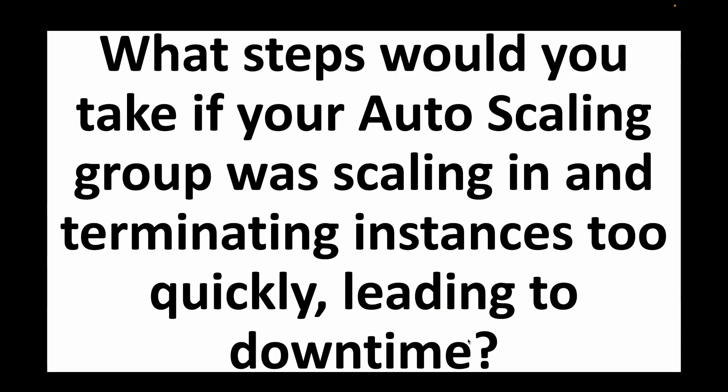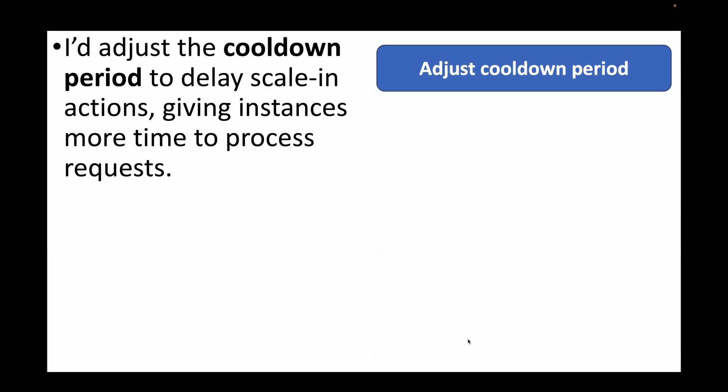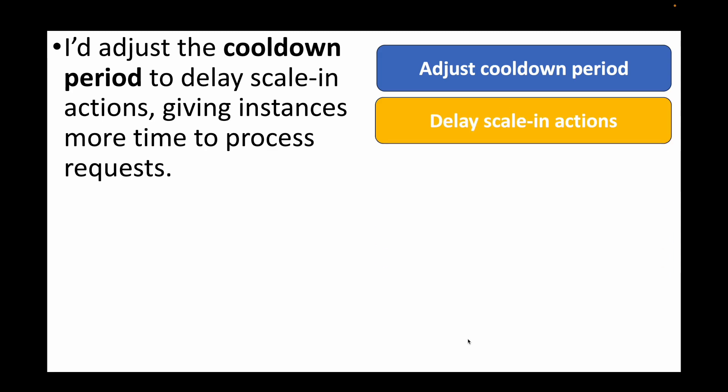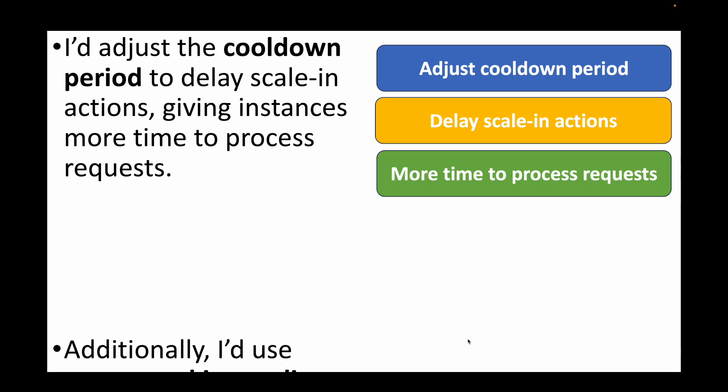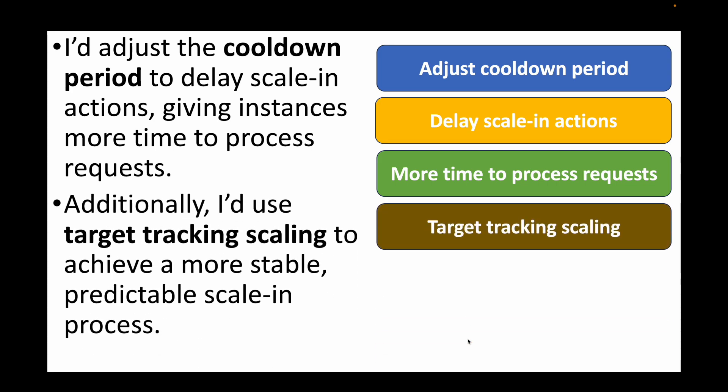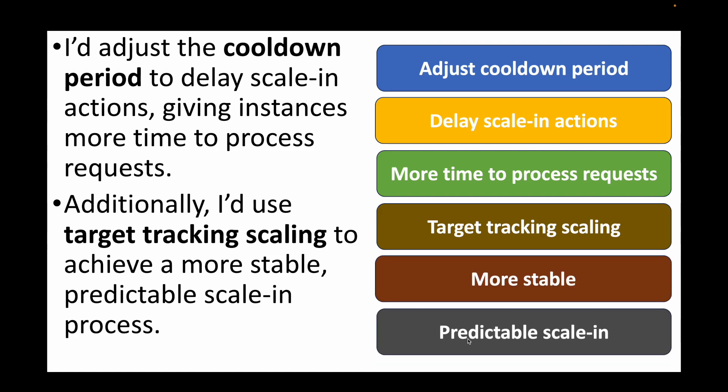The next question: what steps would you take if your auto scaling group was scaling in and terminating instances too quickly, leading to downtime? Again, this is where we use the cooldown period — we adjust that period to delay scaling actions, giving EC2 instances more time to process requests. Additionally, we can use target tracking scaling to achieve a more stable and predictable scaling process.